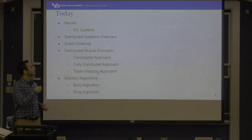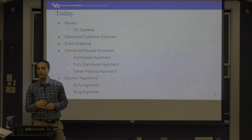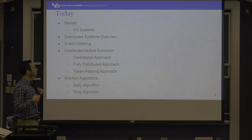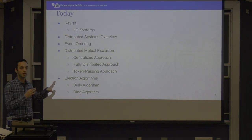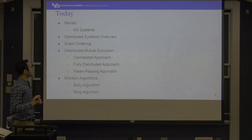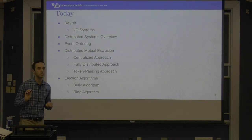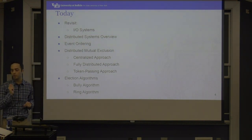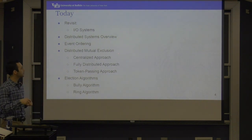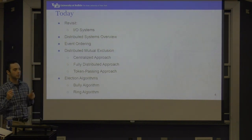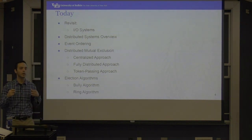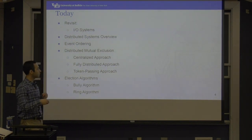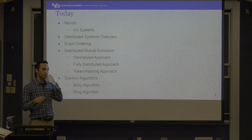Today we're going to first revisit the I/O systems that we didn't finish last session, then talk about distributed systems as an overview, event ordering in the context of distributed systems, and distributed mutual exclusion. There are different approaches: centralized, fully distributed, and token passing. We'll also cover two election algorithms for electing a coordinator, which you should understand and be able to differentiate.